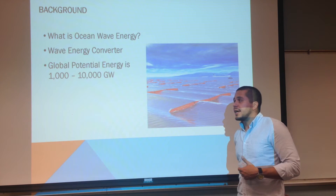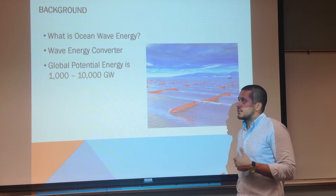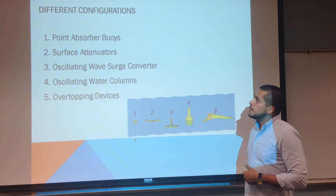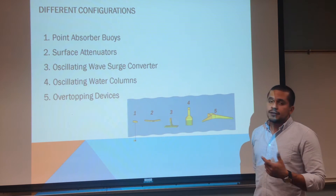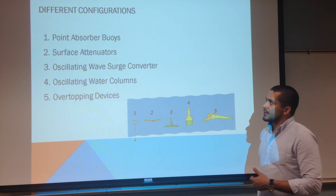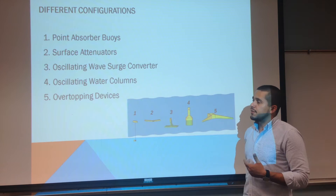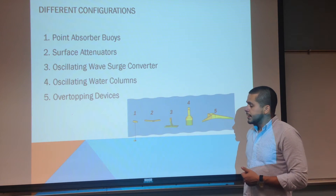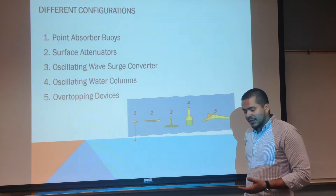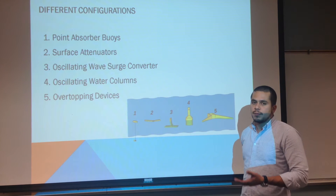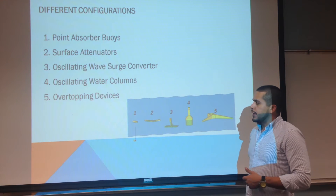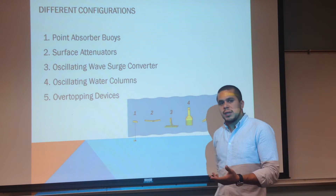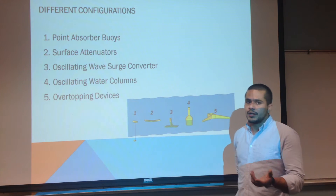The global potential energy is shown to be between 1,000 and 10,000 gigawatts. There are different configurations for these devices. The first device is the point absorber buoys. These buoys transform the up and down movement into electrical energy, doing so through the use of cables and hydraulic rams.